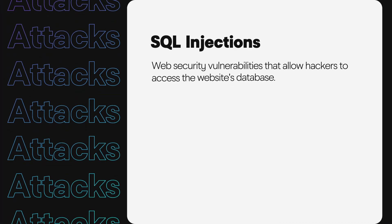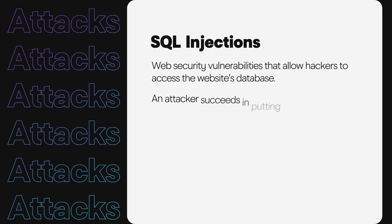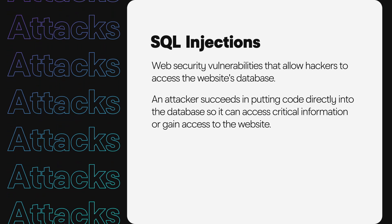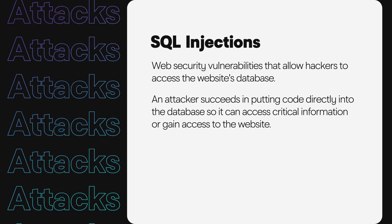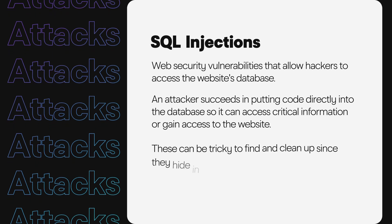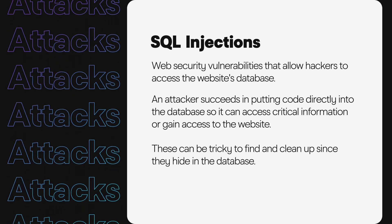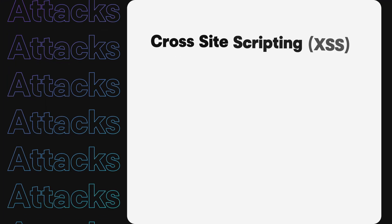SQL injections are web security vulnerabilities that allow bad actors to access the website's database. Since WordPress software needs a database to store information, SQL injection is a common type of cybersecurity attack. An attacker succeeds by encoding code directly into the database so it can access critical information or gain access to the website. These can be tricky to find and clean up since they hide in the database.